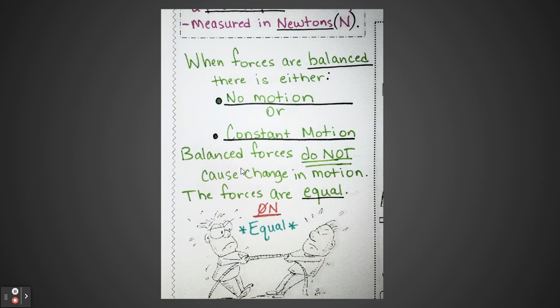Balanced forces do not cause a change in motion. What that means is if an object is moving, it's not going to stop — it's going to continue moving at a constant speed. Constant means the same speed or the same direction. It will not change from left to right or up or down. But if it's stopped, it will not start moving. Because it's balanced, we say the forces are equal and it equals zero newtons — that little line through it means zero, not the letter O.